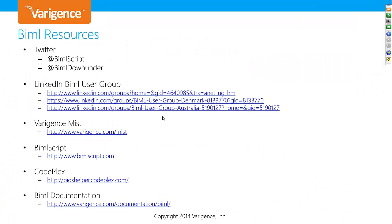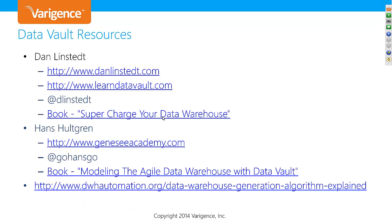That was the demonstration and quick preview. For Biml resources: the main Twitter handle is @bimlscript where we post everything about upcoming events. We also have the Biml Down Under LinkedIn group. The main Biml documentation is at varigent.com, and bimlscript.com is the community website — Paul Mabrak has recently put up a heap of great articles there. If you want the free version of Biml, go to bitshelper.coplex.com. All documentation is at varigent.com.